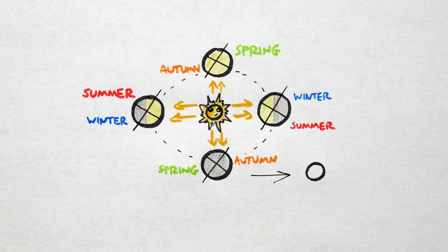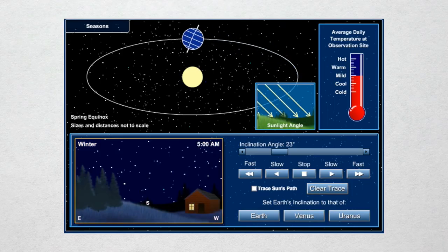Temperatures are moderate, and days and nights are of equal length. Put it all together and an Earth year looks like this.